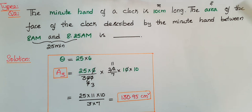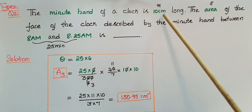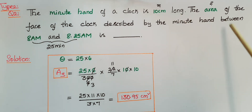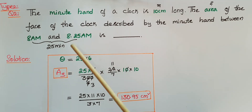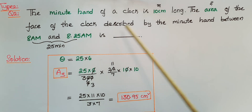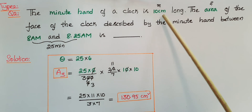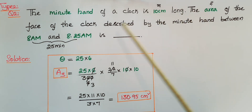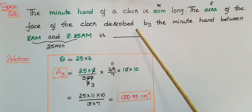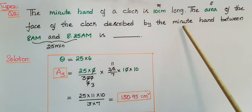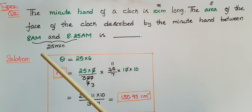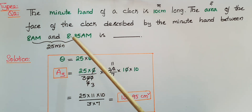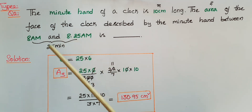This is another type of problem. The minute hand of a clock is 10 centimeters long. The area of the face of the clock described by the minute hand between 8 a.m. and 8:25 a.m. is to be found. The length of the minute hand r is equal to 10 centimeters and we have to find the area of the sector. The time between 8 a.m. and 8:25 a.m. is 25 minutes.